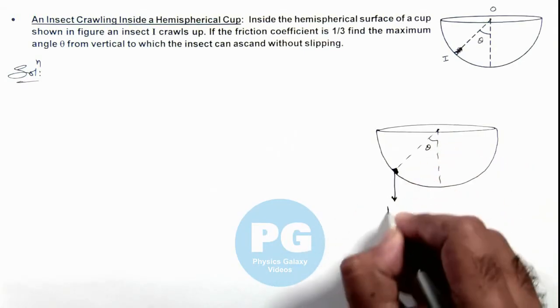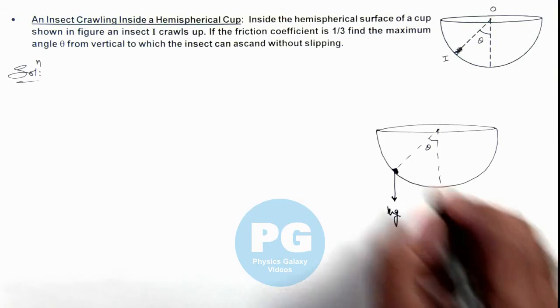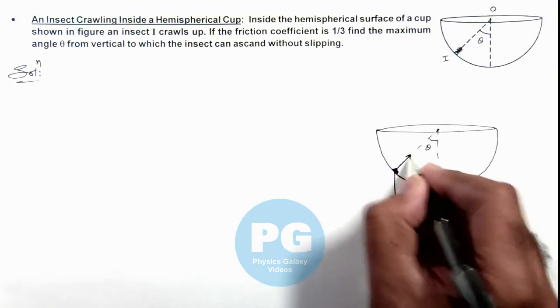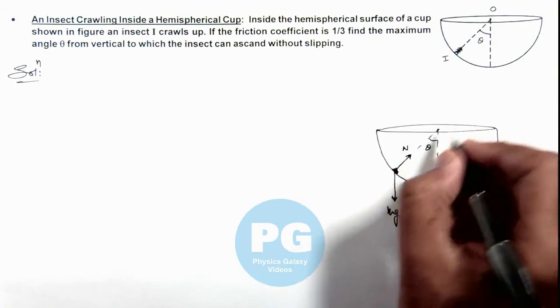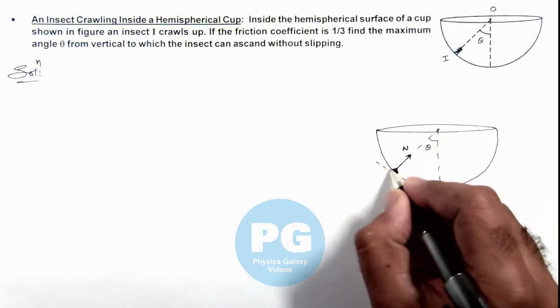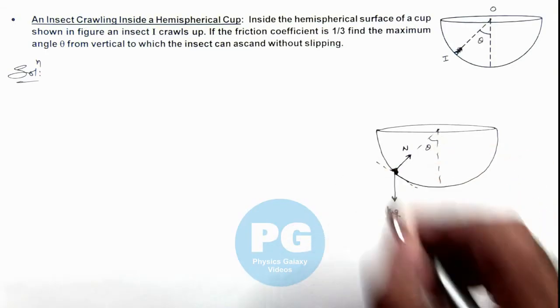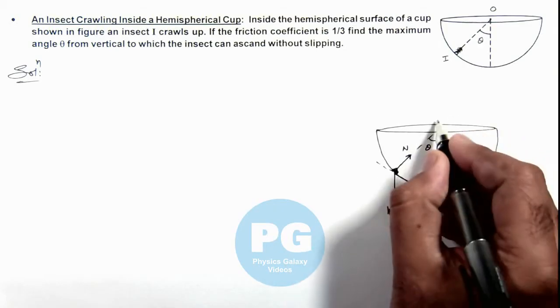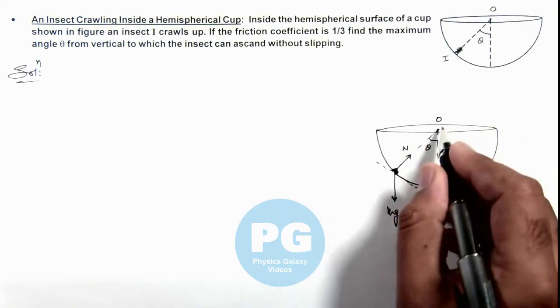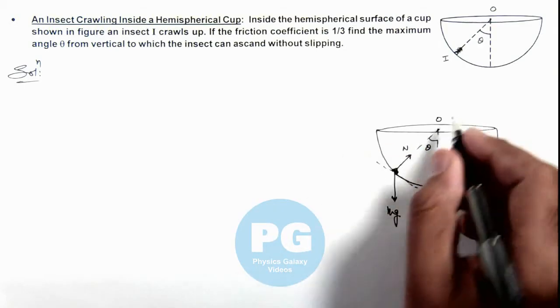The insect's weight mg will act in the downward direction. A normal reaction N will act on it in the direction normal to the surface. This normal force passes through the center of the bowl, as the normal at every point on a sphere passes through its center.